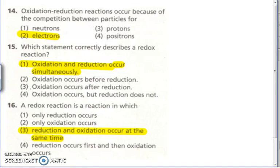Fourteen — oxidation, redox reaction, because everything's competing for electrons. One thing wants the electrons, one thing's going to take and move the electrons, one thing gives them up. Number 15 — you must have both of them; it takes two to tangle, you have to have both simultaneously. Same thing with 16 — that's the same question, just phrased in a different way. Reduction and oxidation occur at the same time.